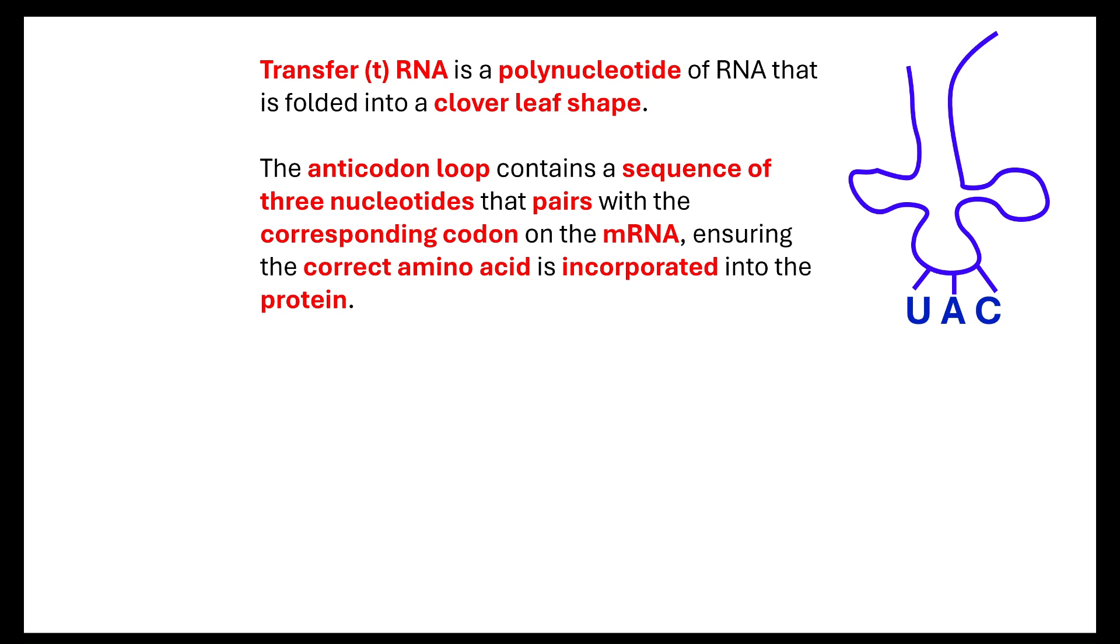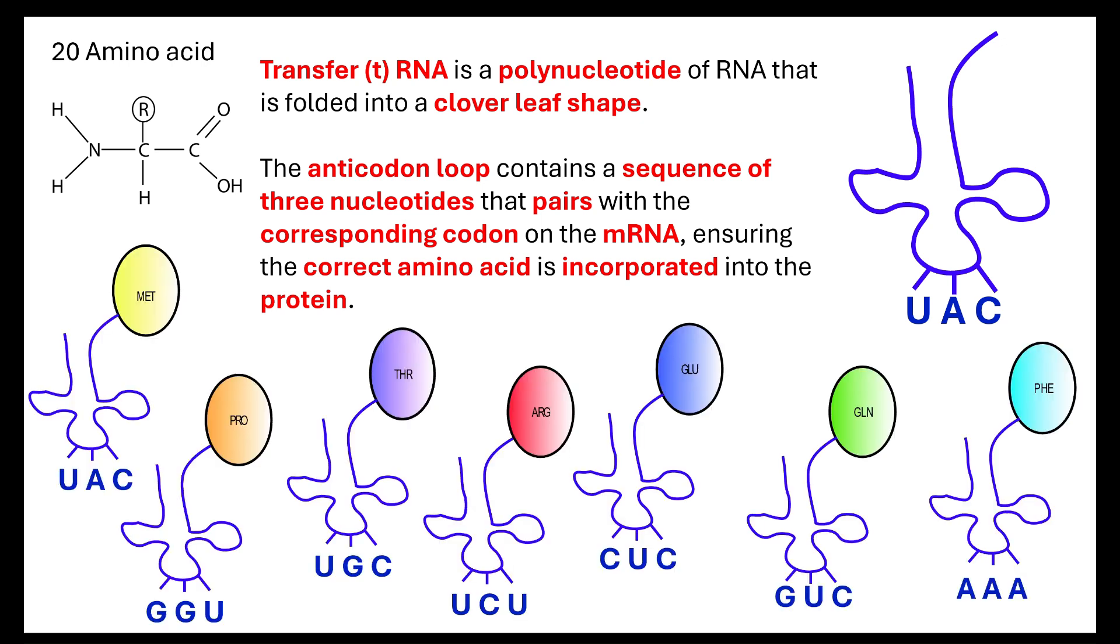Now, the transfer RNA is very important because it transfers, it brings along the correct amino acid. So, it makes sure that the correct amino acid is incorporated into the protein based on the complementary base pairing. So, remember, there are 20 amino acids. Because there's 20 amino acids, that therefore means that there are different combinations.